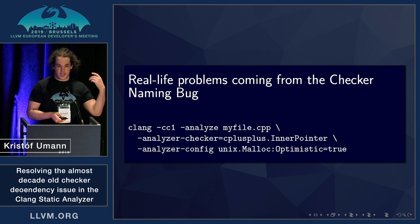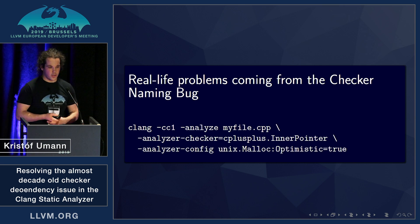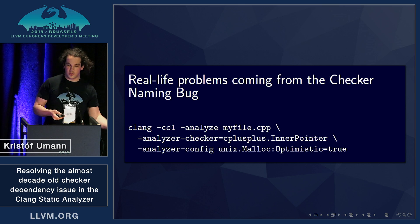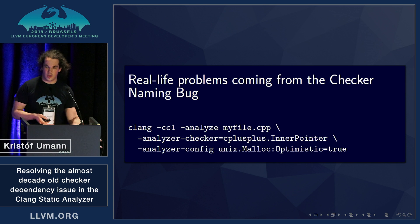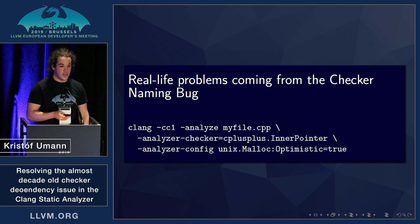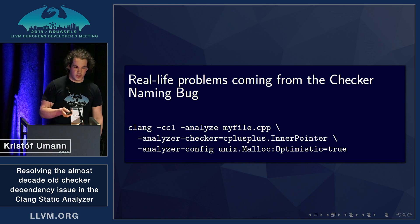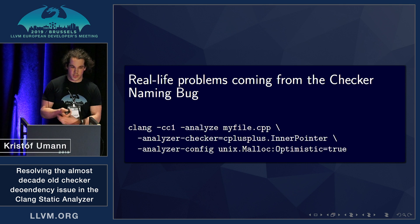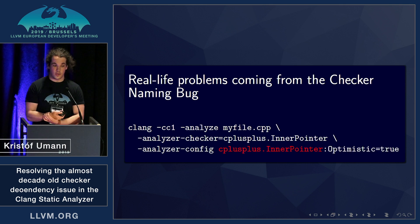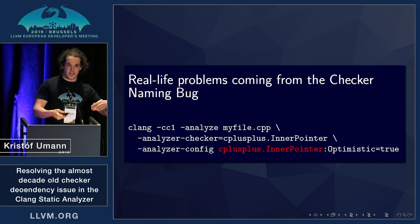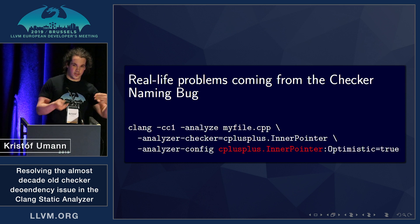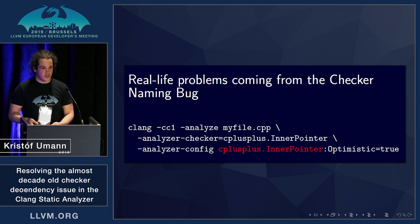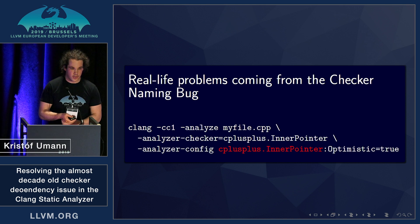As you can see here, this is the same invocation shown earlier, but the analyzer will fail to parse this input correctly, because instead of searching for unix.malloc optimistic equals true, it will look for a different option instead. So in this case, the user invoked the analyzer correctly, yet it still failed to parse.